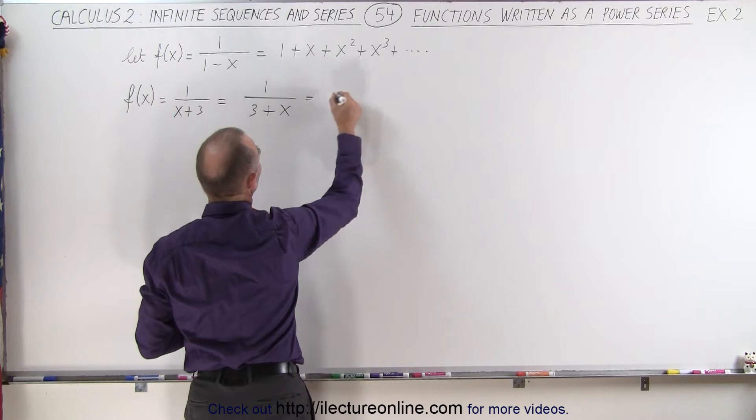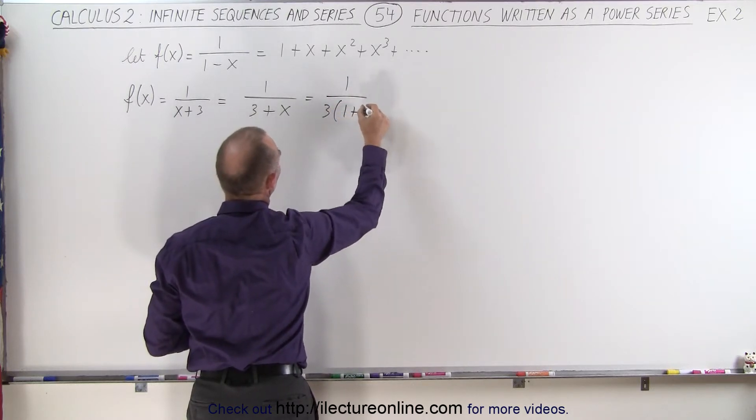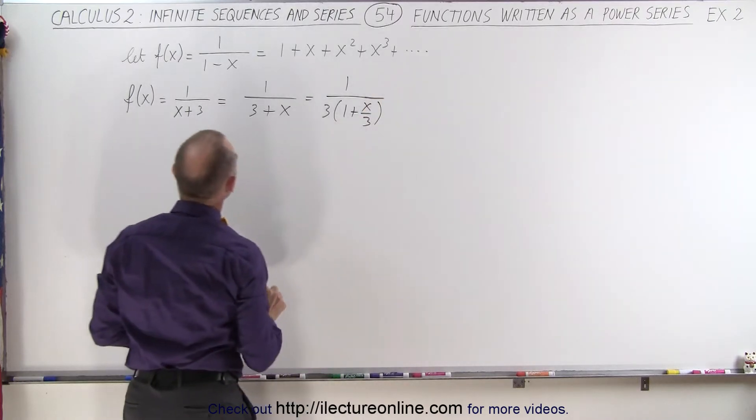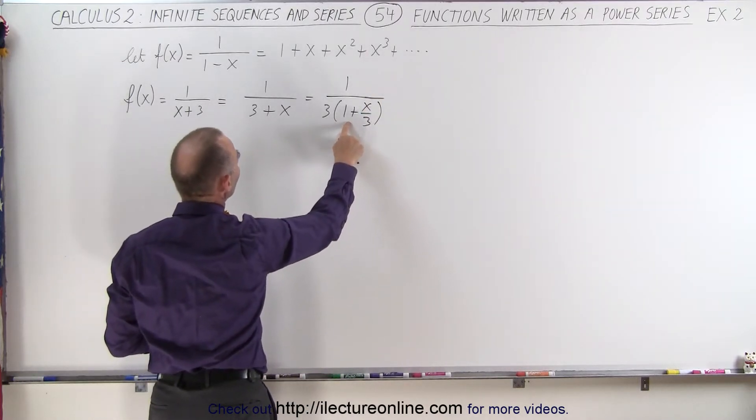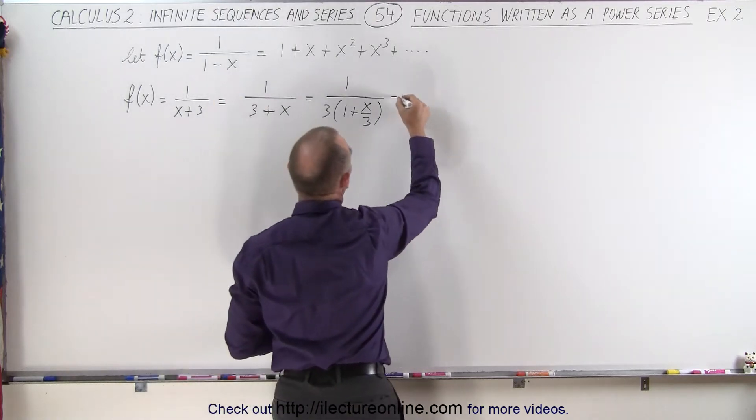So this can be written as 1 over 3 times 1 plus x over 3. Now we're getting closer. We don't want 1 plus x over 3, we want 1 minus something.